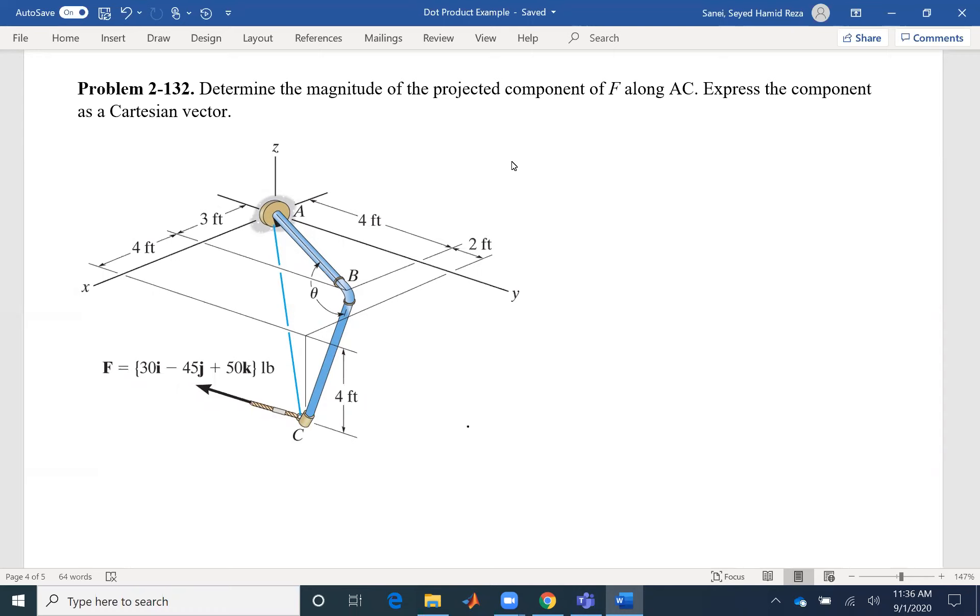If you want to find the projected component of force F along AC, we can use the dot product definition. That would be force F dot UAC. In this problem, I have the force F in Cartesian form, so I have my first vector. I just need to find the unit vector UAC. What is the unit vector? It's a position vector divided by its magnitude. And what is the position vector? It's the coordinate of C minus the coordinate of A.